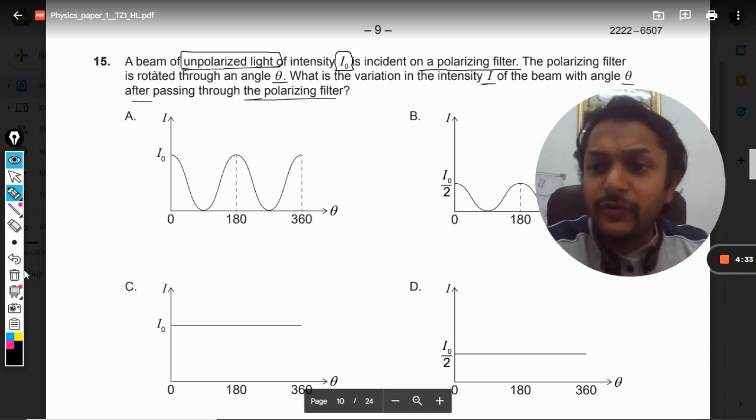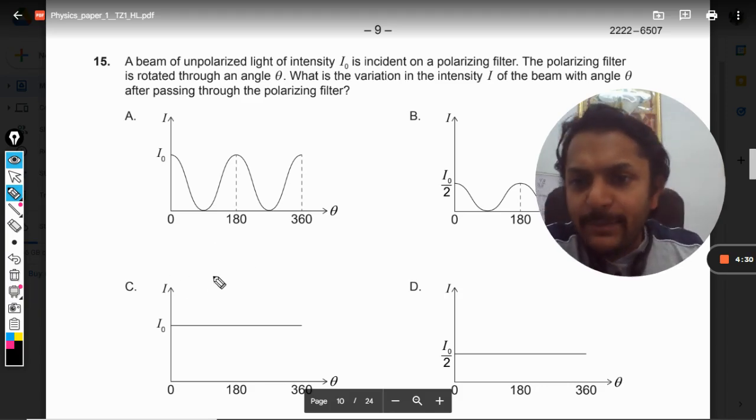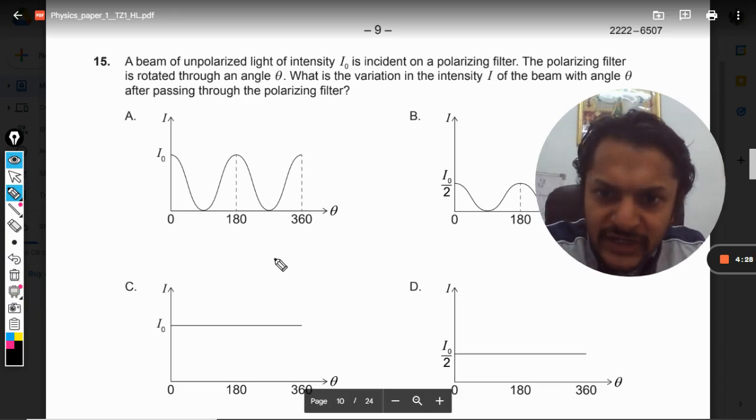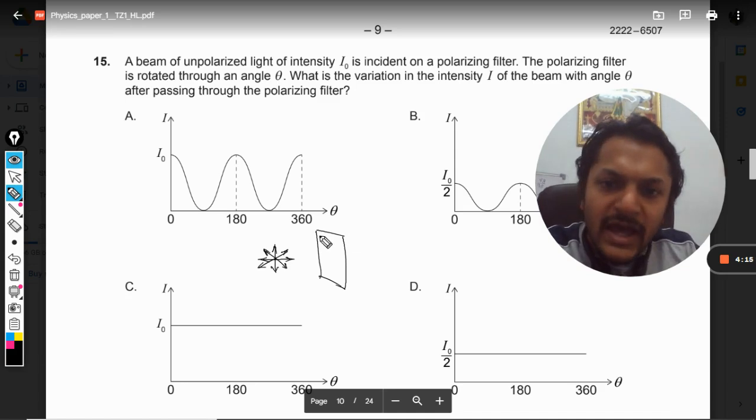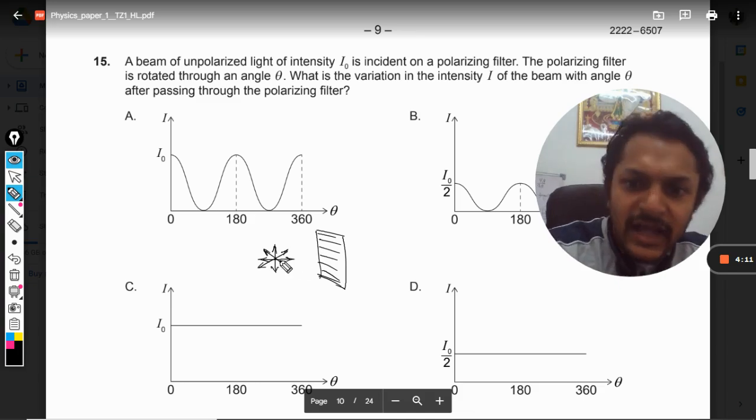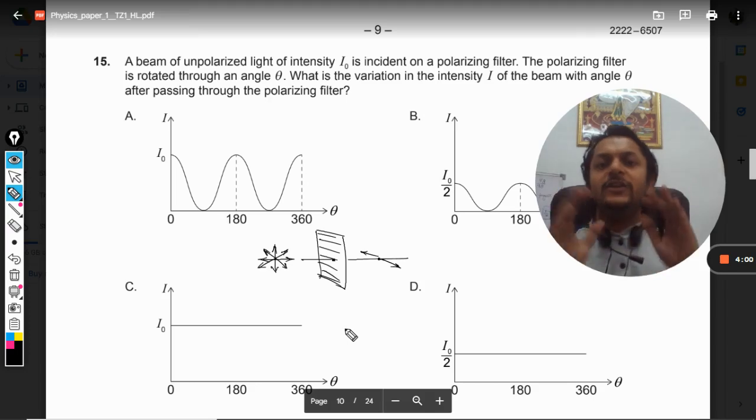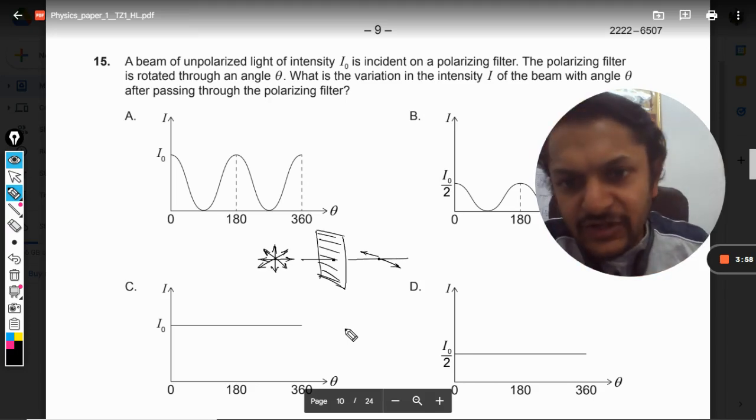What is happening is first of all there is light which is unpolarized - this is how we show it. Now this is going to pass through this polaroid, and let us say that this polaroid's axis is horizontal. When this light passes through, it will become polarized and it would have only the horizontal component left.